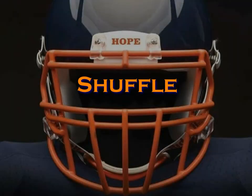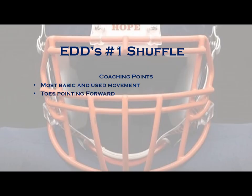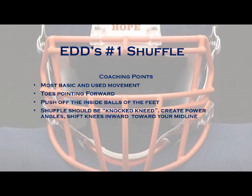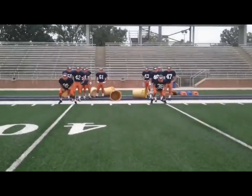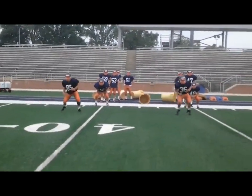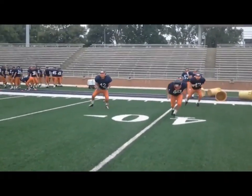The next movement in our everyday drills is known as Shuffle. This is the most basic movement we use throughout our linebacker play. We want to make sure that our toes are pointed forward, that we are working off the inside balls of our feet. As we shuffle, we want to make sure that we are knock-kneed — creating power angles by shifting our knees inward towards our midline. Our feet should work to no closer than hip width, with shoulders and head level with good bend in our ankles, knees, and hips.